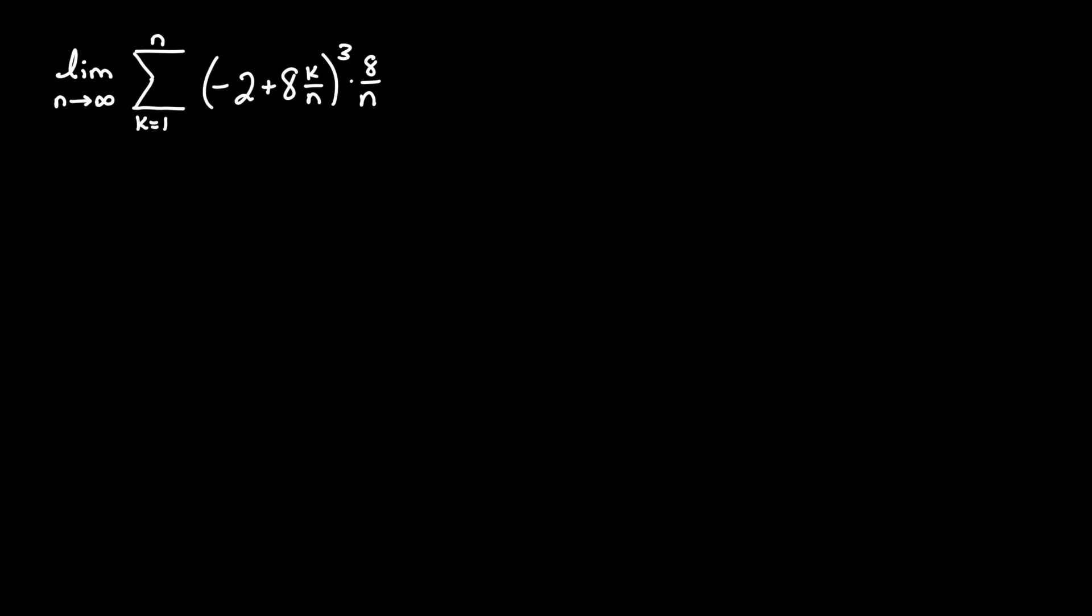Write the following sum as a definite integral: negative 2 plus 8 times k over n quantity cubed times 8 over n between the iterative value k equals 1 up to n, where we take the limit as n approaches infinity.